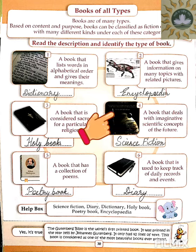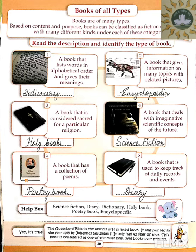Number four: a book that deals with imaginative scientific concepts of the future — fictional scientific ideas about what could happen or is about to happen. These are called science fiction books. S-C-I-E-N-C-E fiction. F-I-C-T-I-O-N. Number five: a book that has a collection of poems — where many poems are written together. This is called a poetry book. P-O-E-T-R-Y, poetry. B-O-O-K-S.